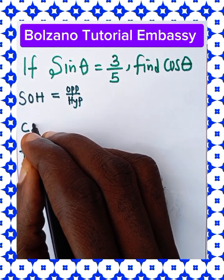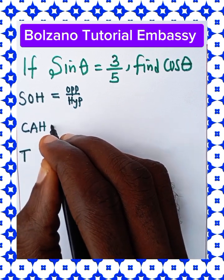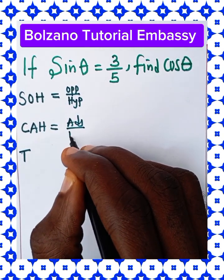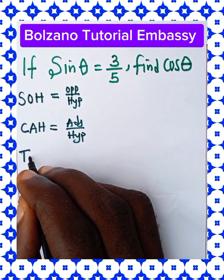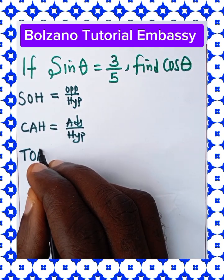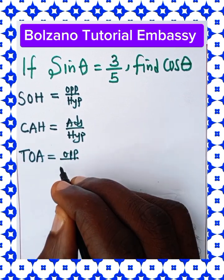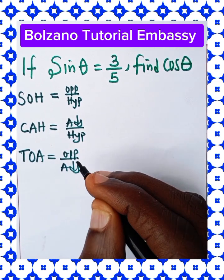Our cosine angle represented with CAH, it's adjacent over hypotenuse. And our tangent angle represented with TOA, it's opposite side over the adjacent side.